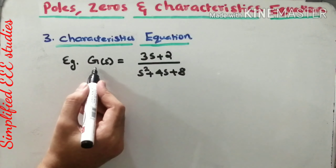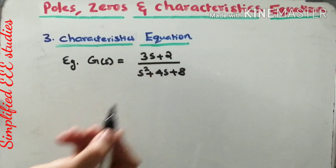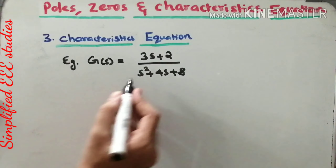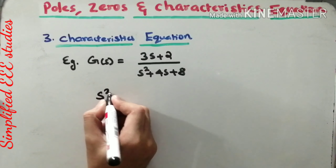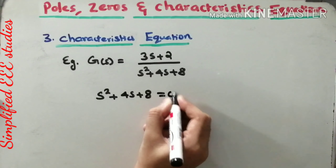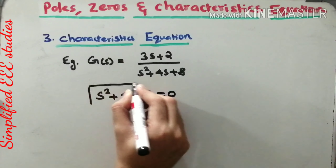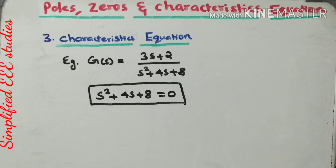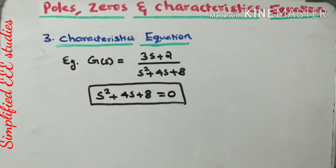Consider the transfer function G(s) = (3s + 2) / (s² + 4s + 8). To write the characteristic equation, look at the denominator polynomial: s² + 4s + 8 = 0. This is the characteristic equation. If you calculate the roots of this characteristic equation, you will get the poles and their total number in the given transfer function. That is the peculiarity of the characteristic equation.